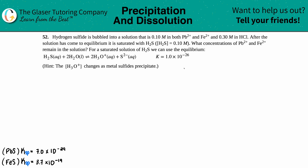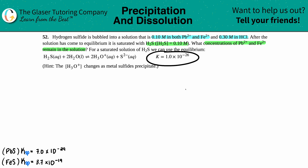Problem 52: hydrogen sulfide is bubbled into a solution that is 0.10 molarity in both lead(II) and iron(II) ions, and 0.30 molarity in HCl. After the solution reaches equilibrium, it is saturated with H₂S, so [H₂S] = 0.10 M. For a saturated H₂S solution, the equilibrium is: H₂S(aq) + 2H₂O(l) ⇌ 2H₃O⁺(aq) + S²⁻(aq), with K = 1×10⁻²⁶.